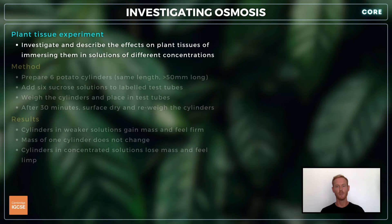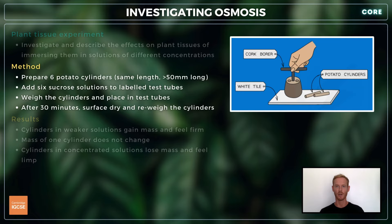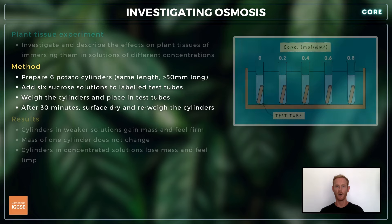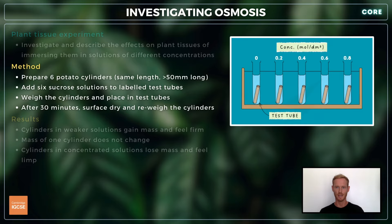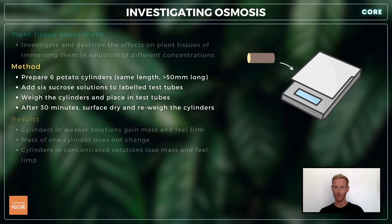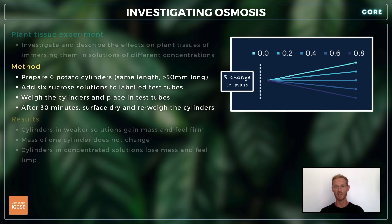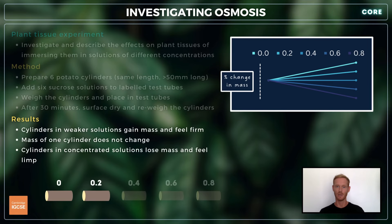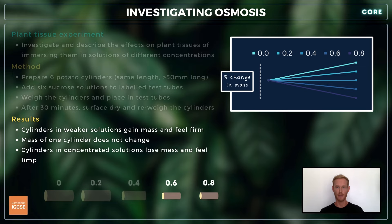The second experiment involves immersing plant tissues in solutions of different concentrations. Prepare five potato cylinders using a cork borer and cut them all to the same length. Prepare five different sucrose solutions and add them to labelled test tubes. Weigh each of the cylinders in turn, record their mass and place them in the test tubes. After a minimum of 30 minutes, remove, surface dry and re-weigh the cylinders. You can then calculate the percentage change in mass of each cylinder and plot the results on a graph. We would expect the cylinders in the weaker solutions to gain mass and feel firm, while those in the concentrated solutions are likely to lose mass and feel limp as water moves out of their cells by osmosis.